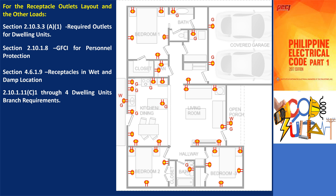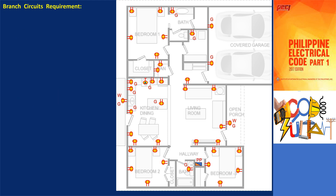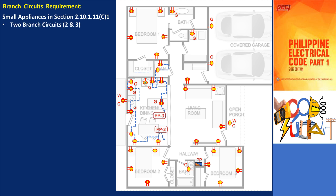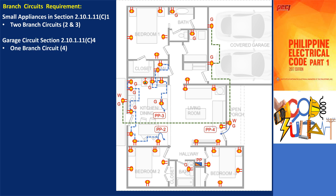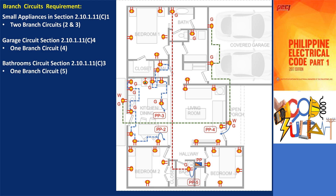These are required outlets for dwelling units, GFCI for personnel protection, receptacles in wet and damp locations, and branch circuit requirements for dwelling units. The layout shows that the small appliances in the kitchen, dining area, and pantry have two 20-ampere branch circuits. Garage circuits have only one 20-ampere branch circuit, including all readily accessible outdoor receptacle outlets. Another 20-ampere branch circuit for two bathrooms, and also for the laundry circuit.